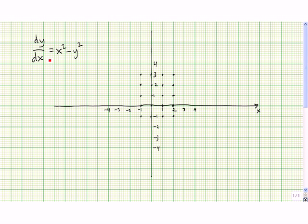Let's make a slope field for this differential equation. Starting at the origin, at the point (0,0), we need to figure out what the slope of the tangent line approximation to the curve would be. To do that, we plug 0 into the x coordinate and 0 into the y coordinate. So at the point (0,0), y prime, which is dy/dx, is equal to 0 squared minus 0 squared, and that's equal to 0. So the tangent line segment at the point should be horizontal. So we draw a little horizontal segment right there.